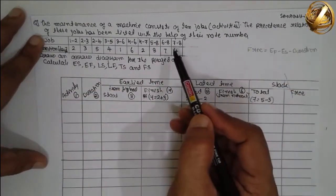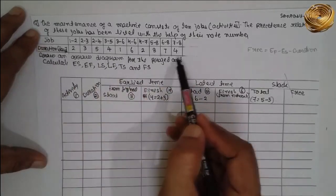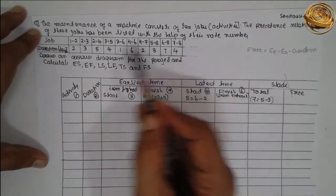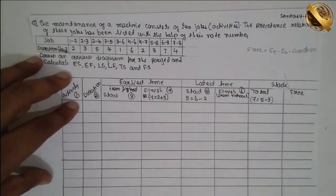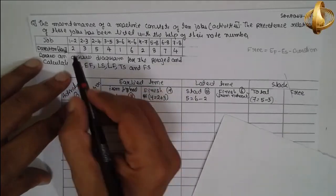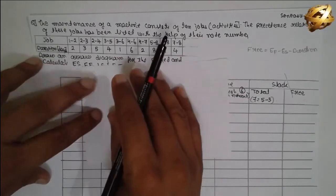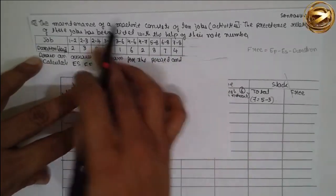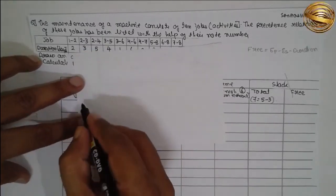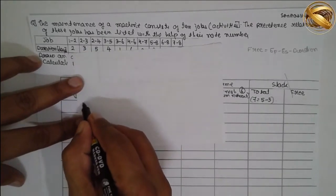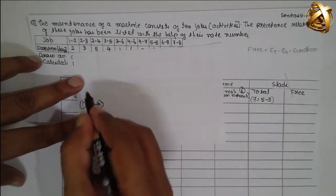This is the data given — job processing time and duration. First, based on this, we are going to construct the network diagram using the activity-on-arrow method. I will construct the diagram based upon the job and duration. First: node 1 to 2, duration is 2.